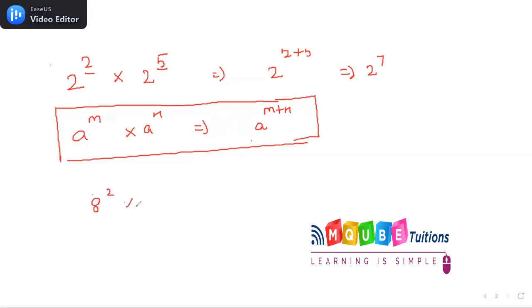8 squared times 8 cubed. So the answer will be 8 to the power of 2 plus 3, which is 8 to the power of 5.